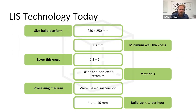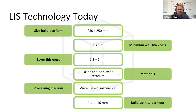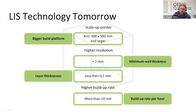What can this technology do today? The biggest building platform currently has a size of 250 × 250 mm, and we can achieve a minimum wall thickness of around 3 mm. Because of the laser wavelength and the water-based suspensions, the process works for both oxide and non-oxide ceramics — regardless of whether they are black or white — depending on the layer thickness and process parameters. A build-up rate of around 10 mm per hour can currently be achieved.